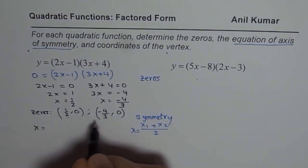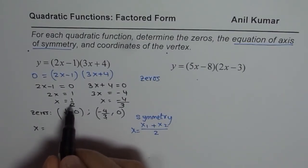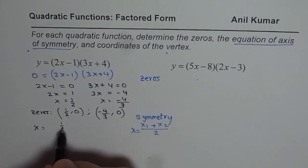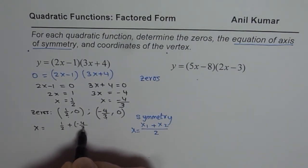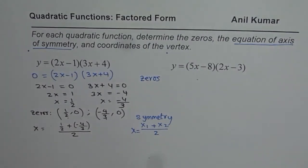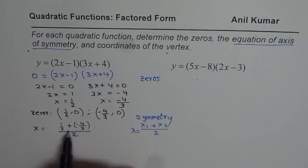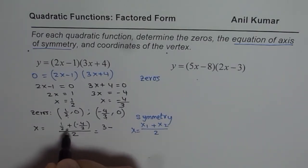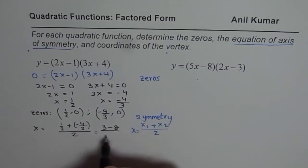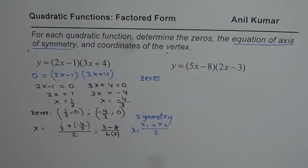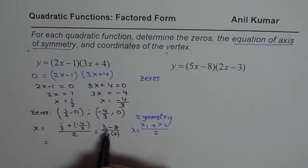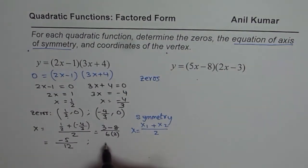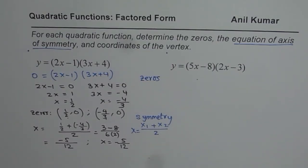So x equals to the average of the two zeros, which are one half and minus 4 over 3. So we compute one half plus minus 4 over 3, all divided by 2. Taking a common denominator of 6, we get 3 minus 8 over 6, divided by 2, which gives minus 5 over 12. So the axis of symmetry is x equals to minus 5 over 12.